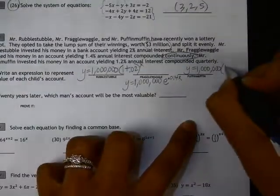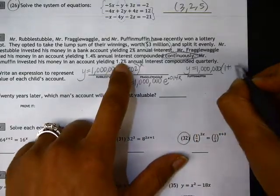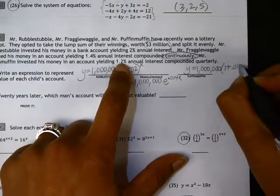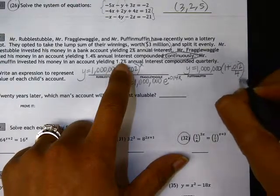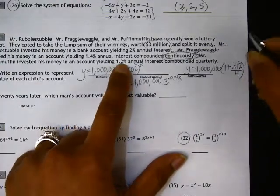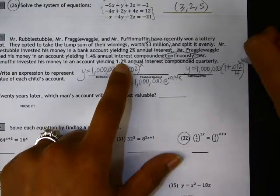So when we set up the multiplier here, we have 1 plus the interest rate is .012, but if it's compounded quarterly, we need to divide by 4. And then the amount of time would end up being 4 quarters every year, so 4X.